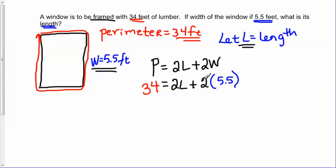So now we've substituted in all the pieces and notice we have an equation that just has this one variable left. So that's what we're going to be solving for - we're going to solve for L, which is going to tell us the length of the window. So let's go ahead and solve this equation. We have some simplifying to do on the right side of the equation. So we're going to have 34 on the left side. I can't do anything right now with this 2L, but that 2 times 5.5 I can certainly do. 2 times 5.5 is going to give us 11.